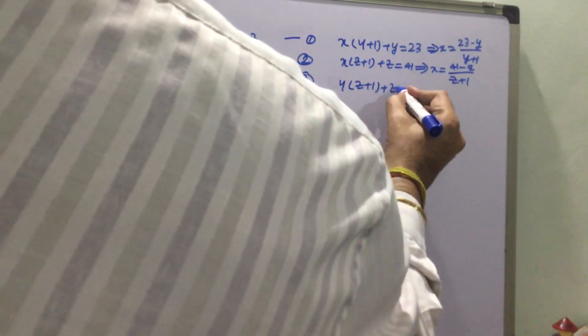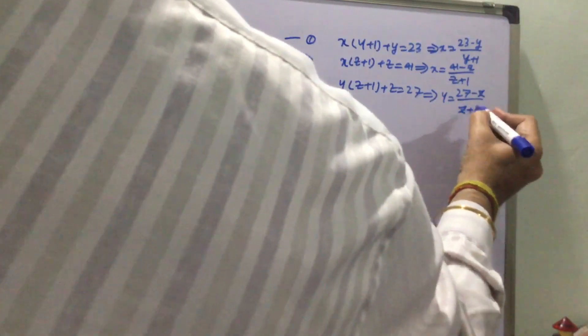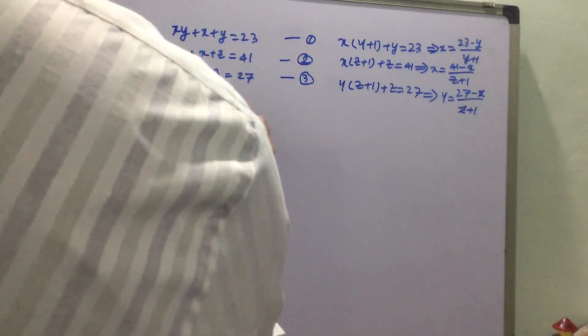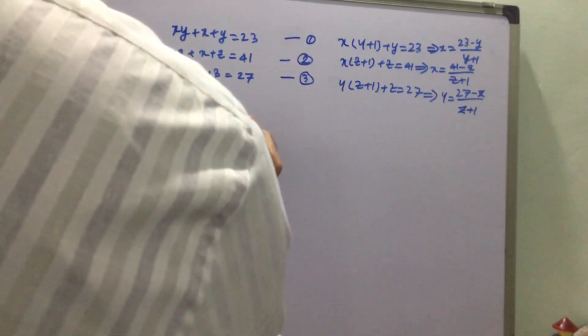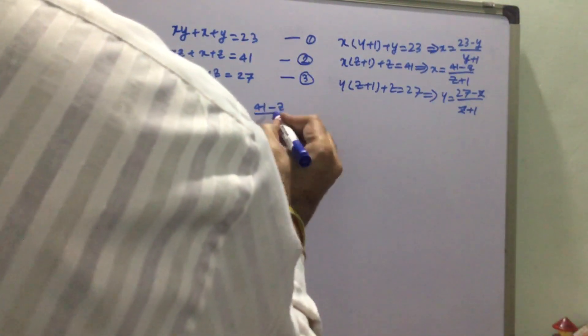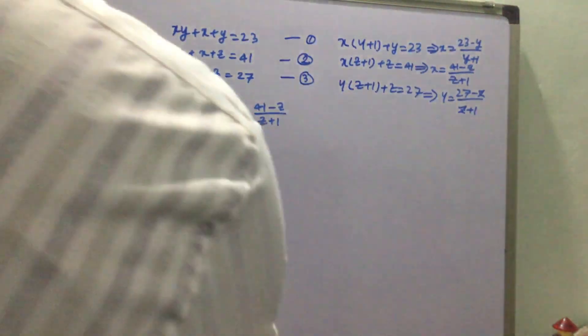From the third equation, yz + y + z = 27, we get y = (27 - z) / (z + 1). From the two expressions for x, we set (23 - y) / (y + 1) = (41 - z) / (z + 1), and cross-multiply these two equations.